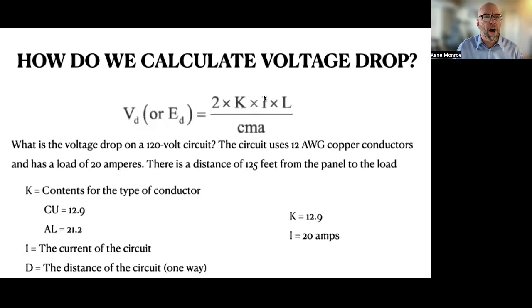Next, we got to figure out I. I is current. And right there, it tells you right there, the load of 20 amperes was used in this question. So I is 20. Next, we have to find the distance. The distance is 125 feet. They told us there. So K-I-D or K-I-L. There's all your information you need there. Only thing we're missing is the circular mils.